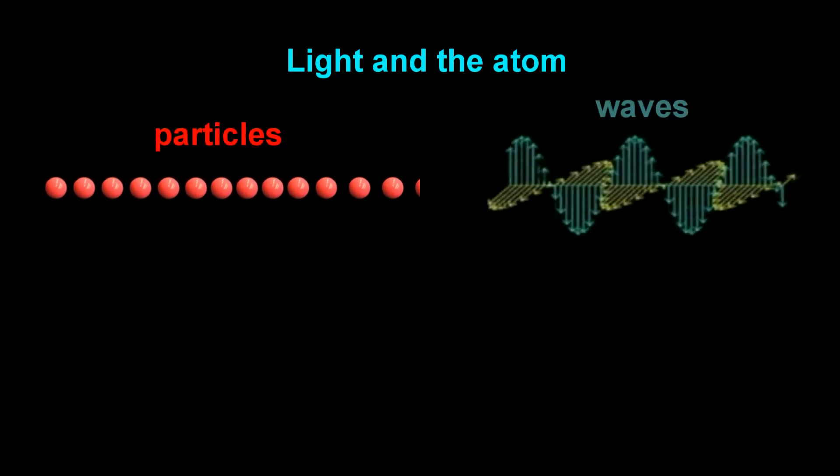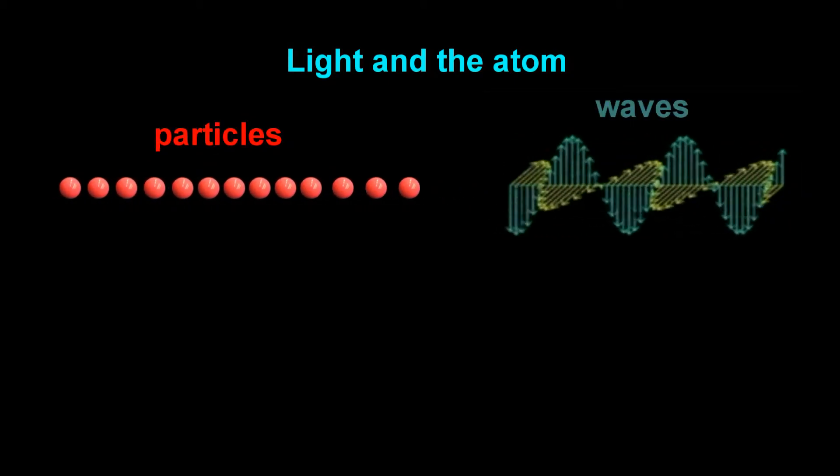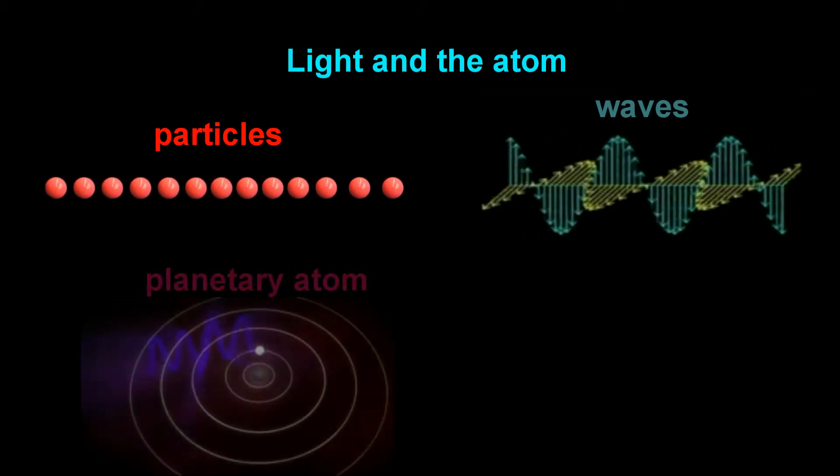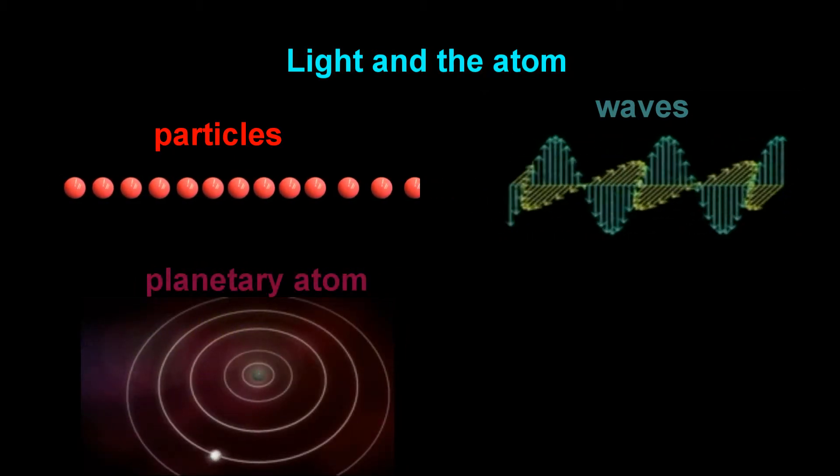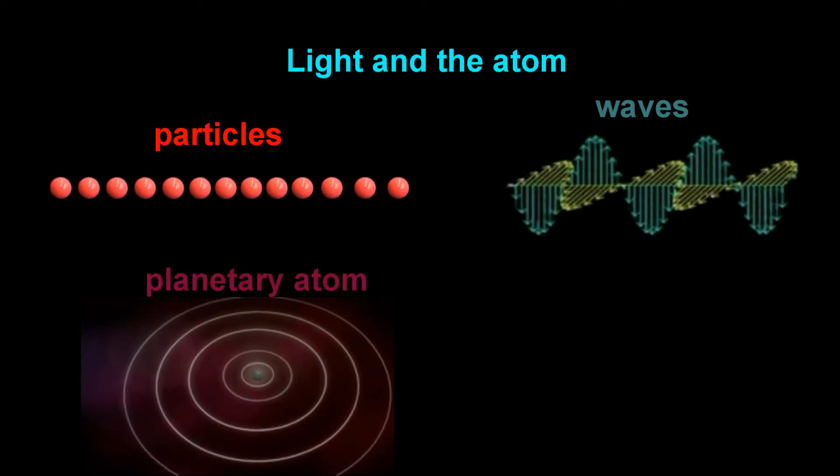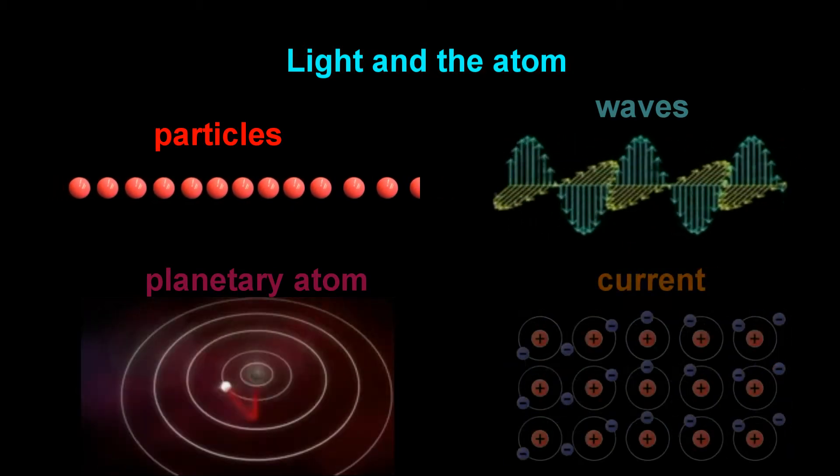What if we took a new look at the particles and transverse wave models of light, as well as at the ubiquitous planetary atom with which we typically simulate phenomena such as quantum jump, ionization, and electricity?